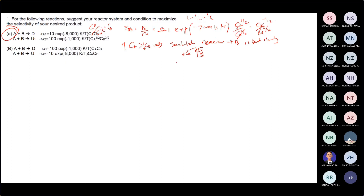Another option — as your classmate mentioned — is CSTR. But we can't just say CSTR with concentration A, because usually there's dilution involved. So we can say: using a series of CSTRs.